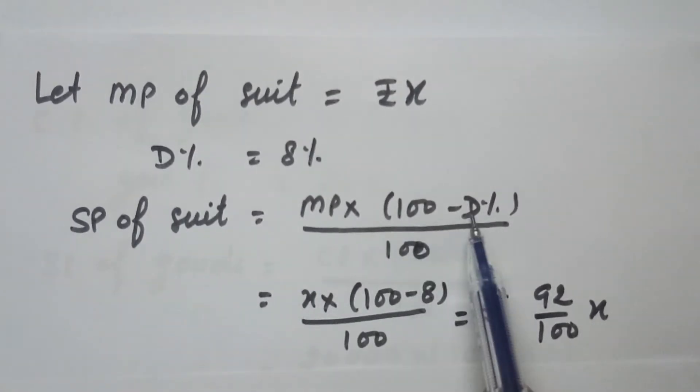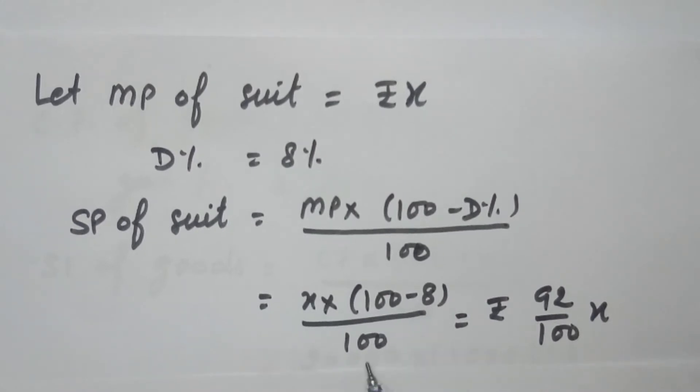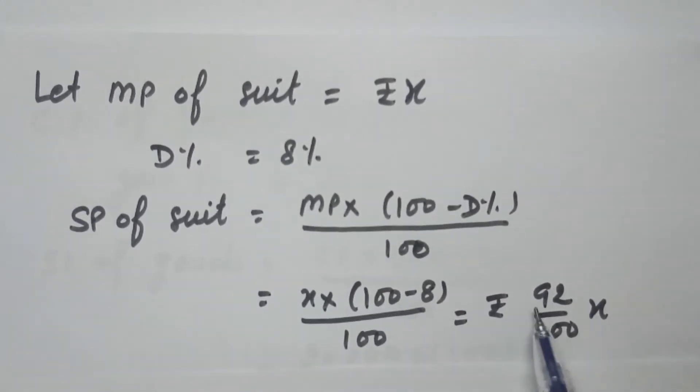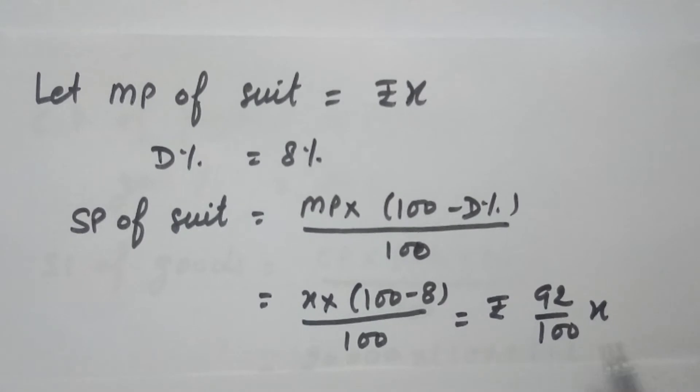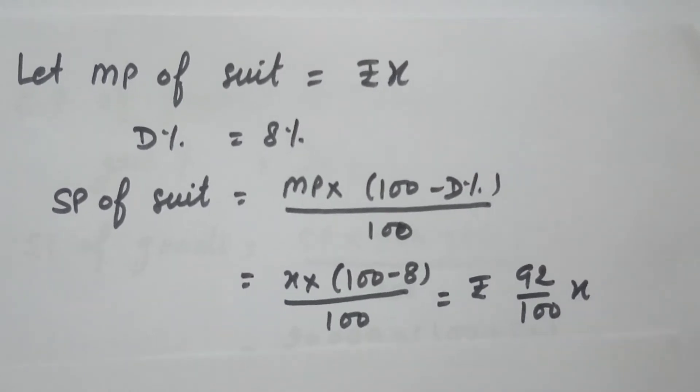MP is X, discount percent is 8%. So X times 100 minus 8 over 100, 100 minus 8 is 92. So this will remain as it is, we will not simplify. So it is 92 over 100X. This is the selling price of the suit.